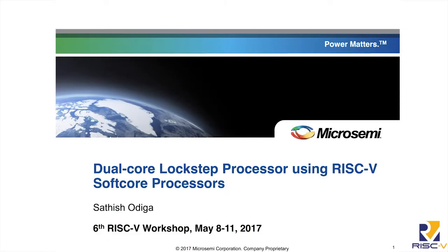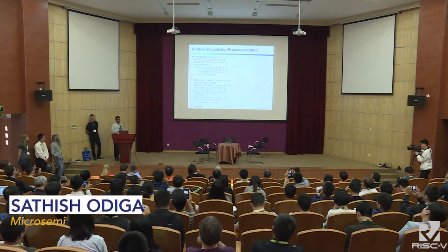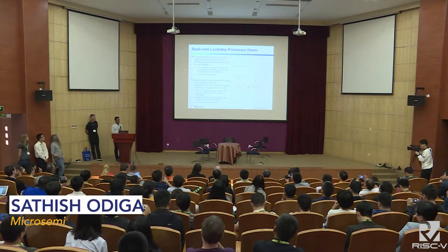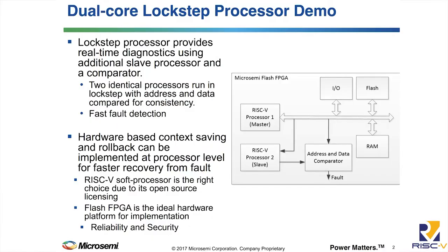Hi, I'm Satish. I work for Microsemi. Today, I'm going to demonstrate a lockstep processor implementation using RISC-V on a Microsemi FPGA. Lockstep processors are used to detect faults in the processor — faults can be due to unsafe conditions like subjecting the device to radiation. As you can see in the block diagram, a lockstep processor architecture has two processors: one acting as a master and another as a slave. They both run the same instruction cycle by cycle, running in lockstep. A comparator compares the addresses and data from both processors, and whenever there is a deviation, we detect it and flag the error.